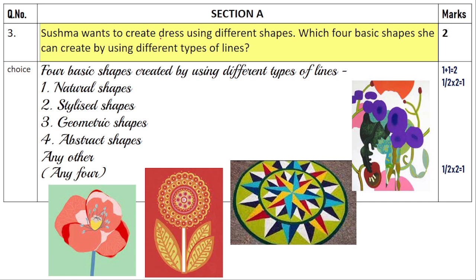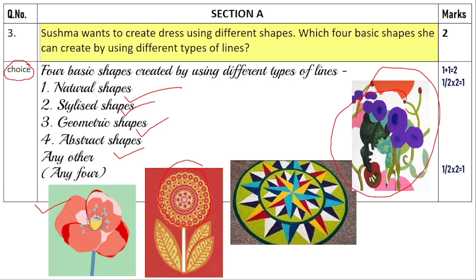The alternative question 3: Sushma wants to create a dress using different shapes. Which four shapes can she create using different types of lines? The four basic shapes, each carrying half a mark, are: natural shapes (like a flower as found in nature), stylized shapes (a fashionized version of natural shapes), geometric shapes (using geometrical forms, lines, circles), and abstract shapes (designer creations that are not clearly defined). For example: natural flower, stylized flower, geometric flower, and abstract flower.